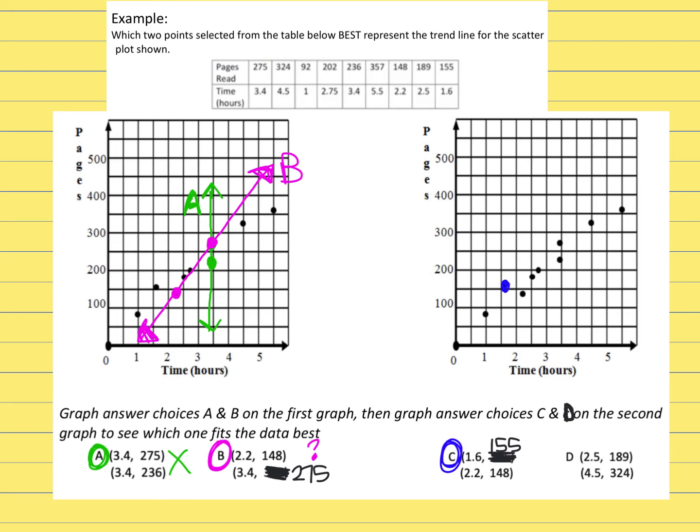Then the second point in answer choice C says go to 2.2 and 148, which we already had this one. So that's why I kind of duplicated my graphs because now I've got dots on top of each other, but 2.2 and 148 would be right here.